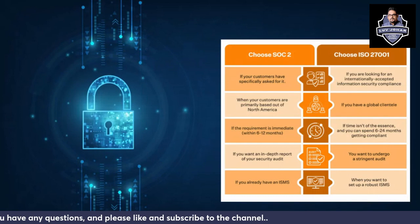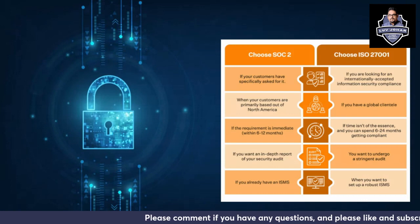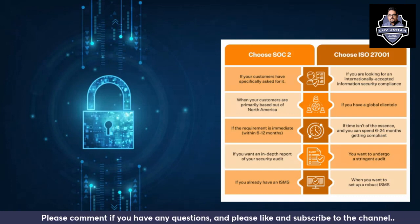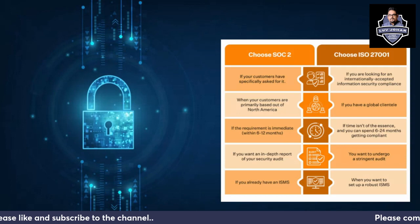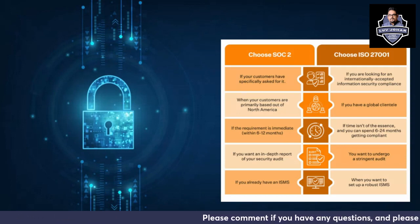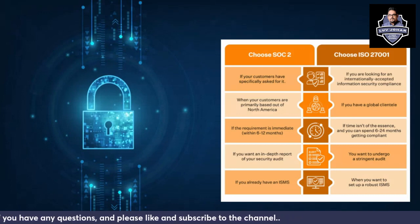Choose SOC 2 if your customers have specifically asked for it. Choose ISO 27001 if you are looking for an internationally accepted information security compliance. Choose SOC 2 when your customers are primarily based in the US, and choose ISO 27001 if you have a global clientele. If the requirement is immediate and you can spend 6 to 24 months getting compliant, SOC 2 can be obtained more quickly — in 6 to 12 months — while ISO 27001 takes longer.